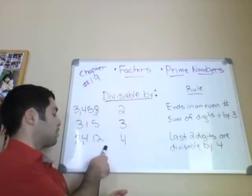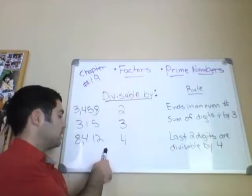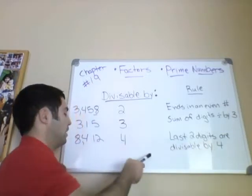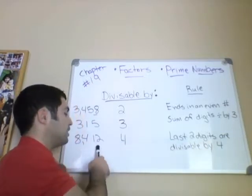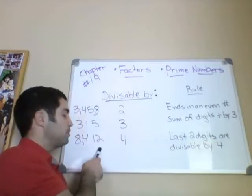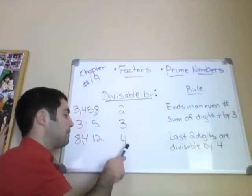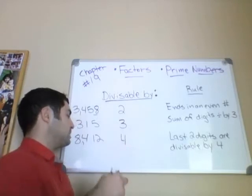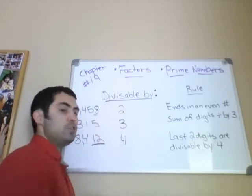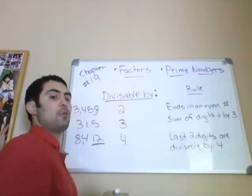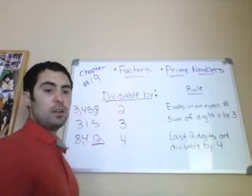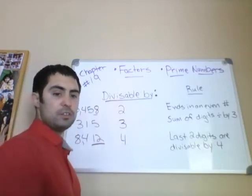If the last two digits are divisible by 4, then you can divide the whole number by 4. Can we divide 8,412 by 4? The answer is yes — because if you look at the last two digits, 12 is divisible by 4, which means 8,412 is also divisible by 4.